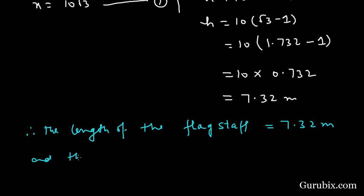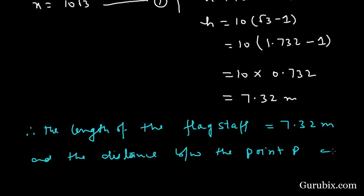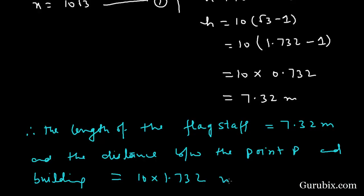And the distance between point P and the building equals 10 times 1.732 meters, which means 17.32 meters. So this is the solution of the question. Thank you.